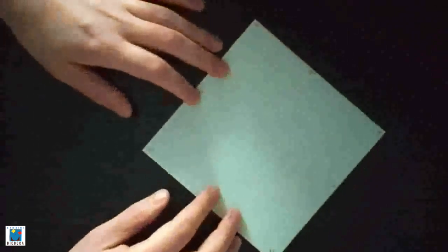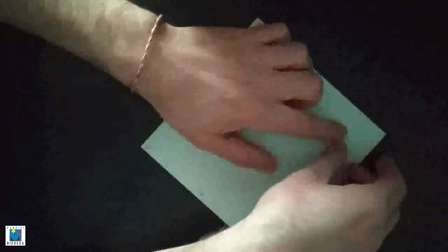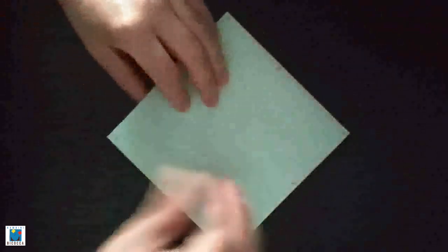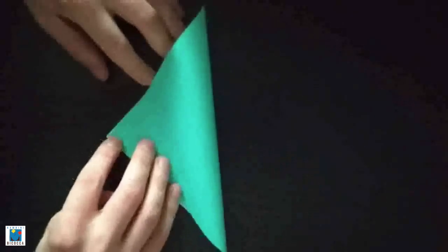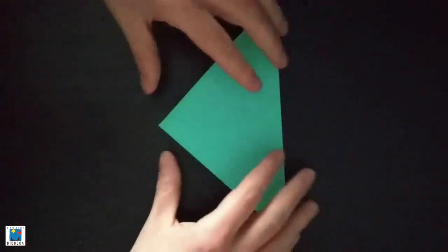Then, we're gonna start folding our paper. We're gonna take corner number 1 and we're gonna put it on corner number 5. Make sure they match and squish it as well as possible. Now, we can open our paper.